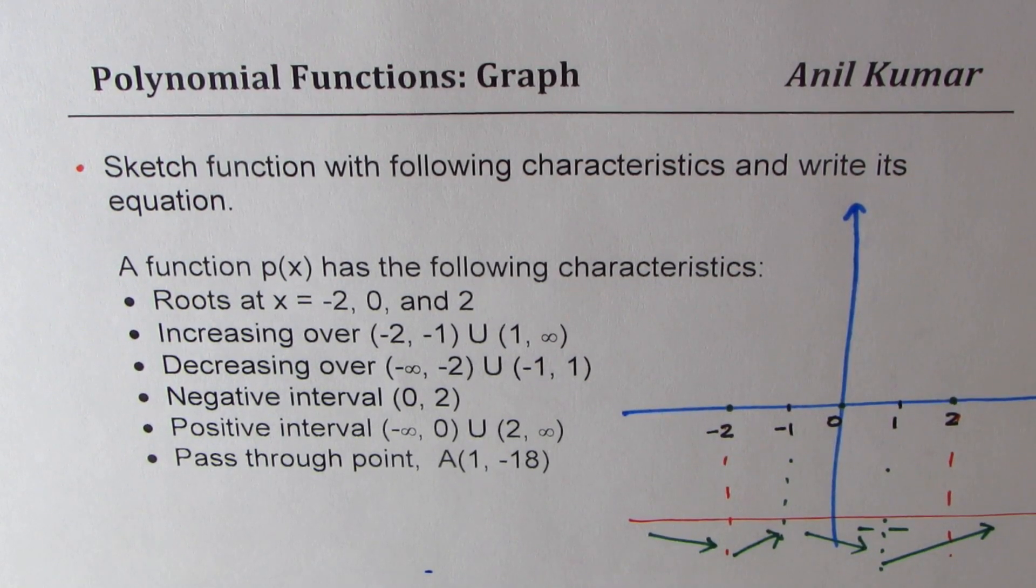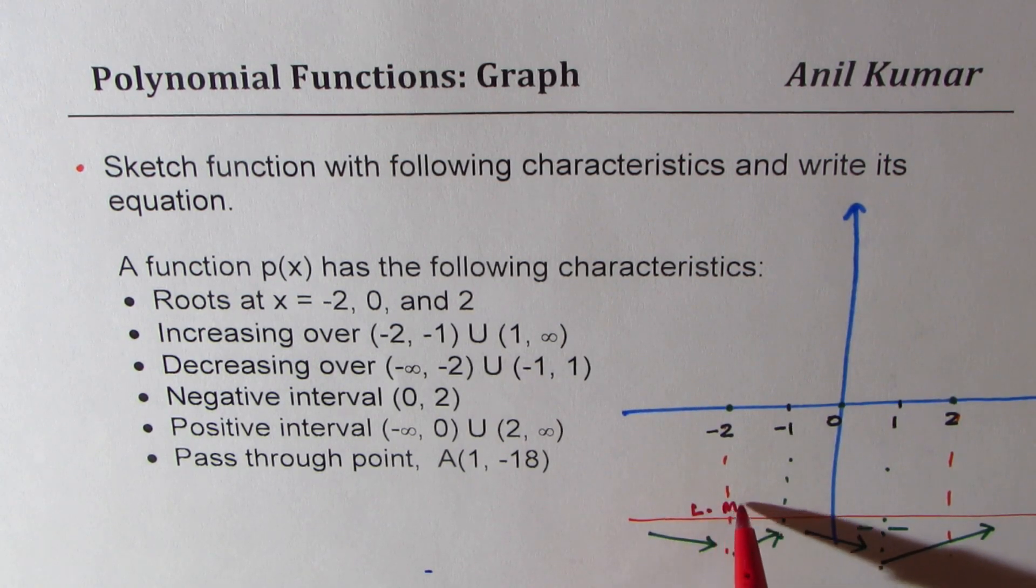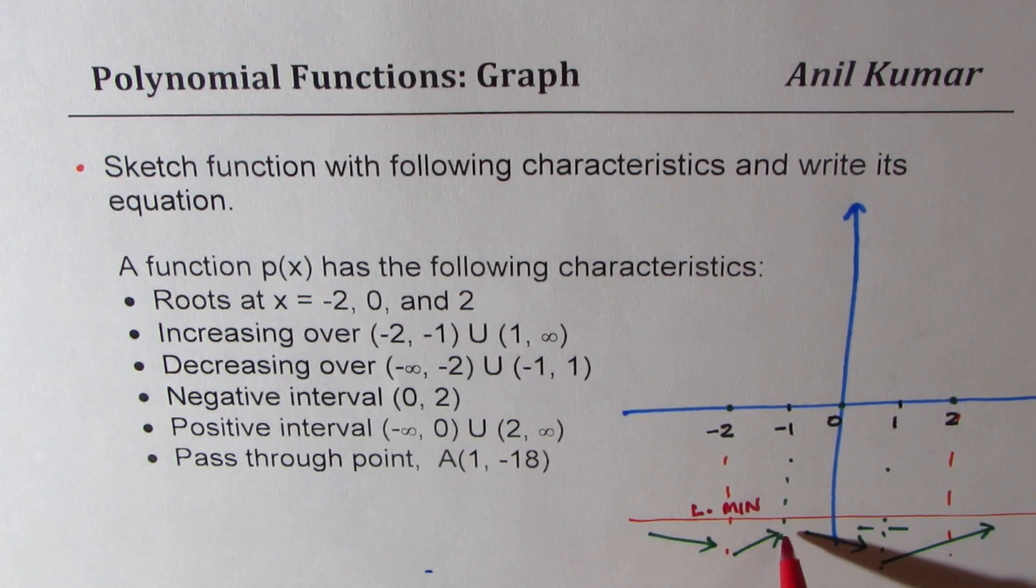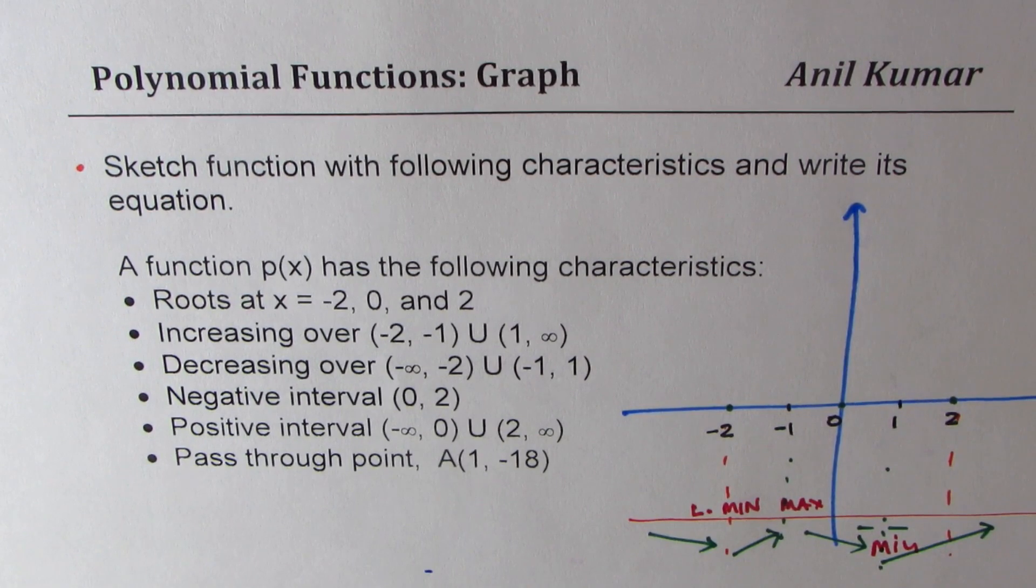Now looking into this, our graph has to come down and turn. So that is the turning point. So here we should have a local minimum, and at this point we have a maximum. Then we again have a minimum here. So that helps you understand the whole situation.